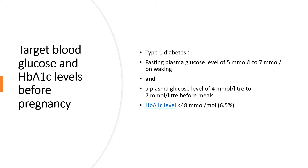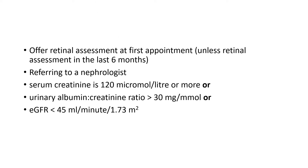Target blood glucose and HbA1c levels before pregnancy: for type 1 diabetes, fasting blood glucose should be 5–7 mmol/L on waking and plasma glucose 4–7 mmol/L before meals. HbA1c target is less than 48 (6.5%) preconception. Offer retinal assessment at the first appointment unless one has been carried out in the last six months. Refer to a nephrologist if serum creatinine is 120 micromoles/L or more, urinary albumin-creatinine ratio is over 30 mg/mmol, or eGFR is less than 45 mL/min.